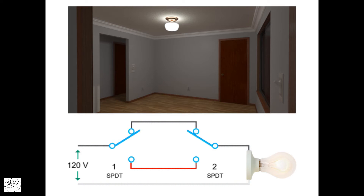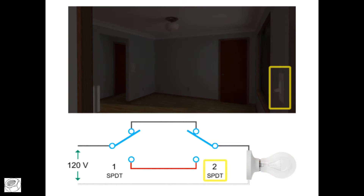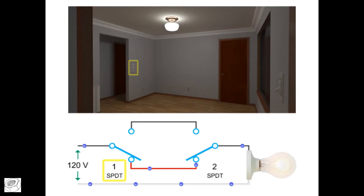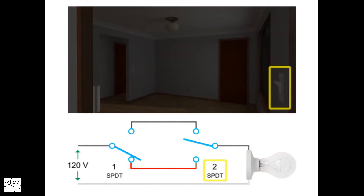If you place switch two in the down position while switch one remains in the up position, the circuit is broken and current does not flow to the light bulb. This would be the same as turning a ceiling light on using a wall switch as you enter a room from one door, and turning the light off as you throw a switch when leaving the room using another door.